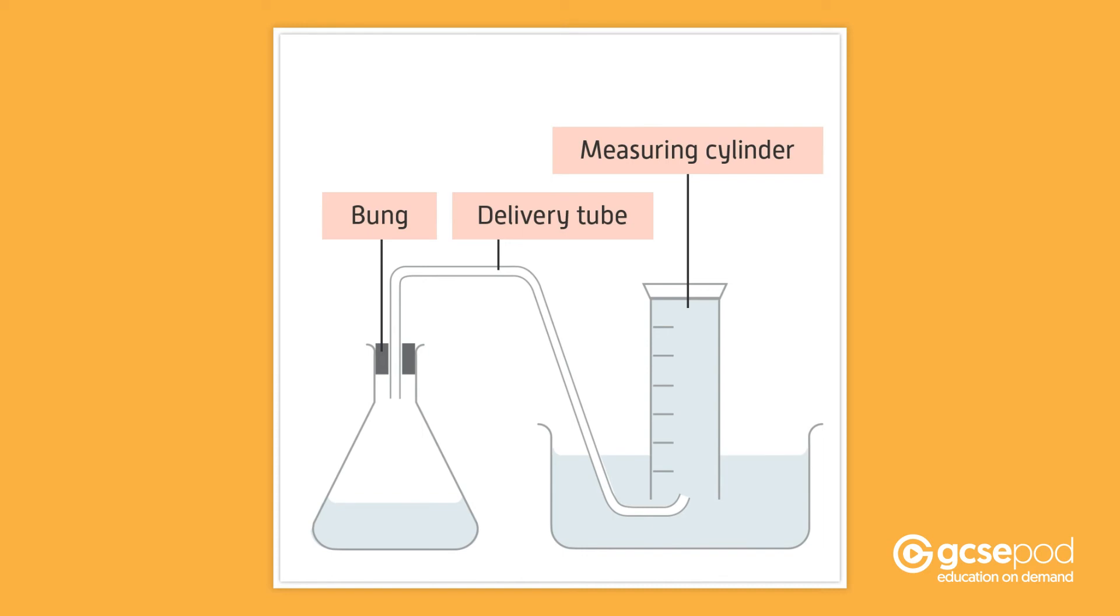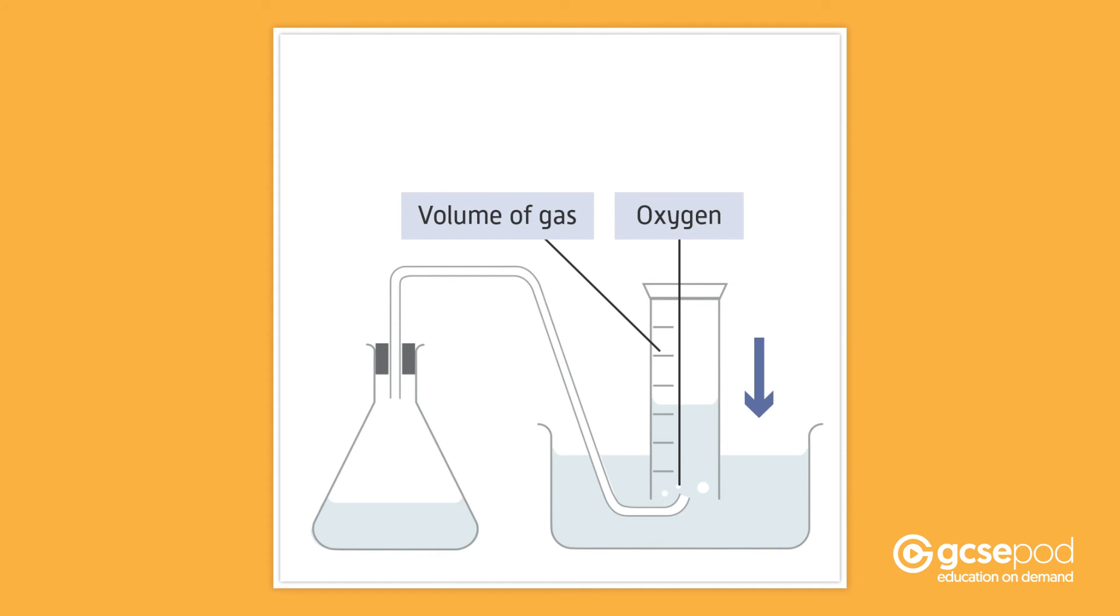During the reaction, oxygen will be produced and will pass through the delivery tube and into the measuring cylinder. The gas will push out the water so the volume of gas can be measured using the markings on the side of the measuring cylinder.